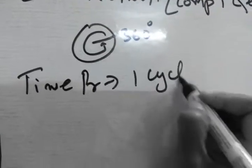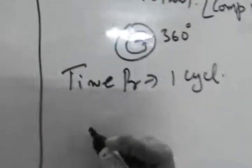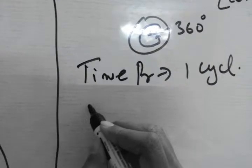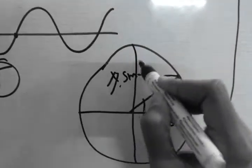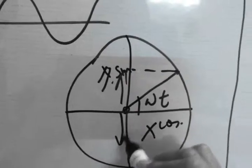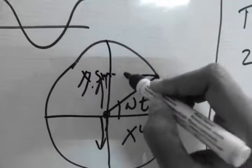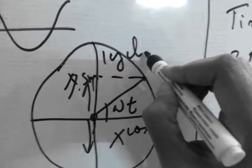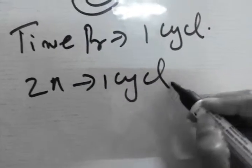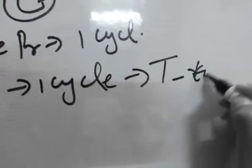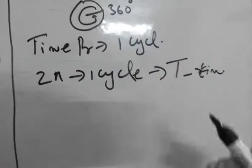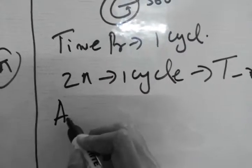Now what is a time period? Time period is actually the time for one cycle. Now we know that one cycle, that is 2π, is carrying the one cycle. We can see when the particle goes from here, then here, and then here, it will complete one cycle. That is, one cycle will be 2π according to this, and here 2π is one cycle that is in T time.